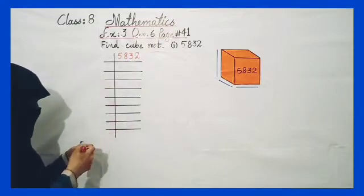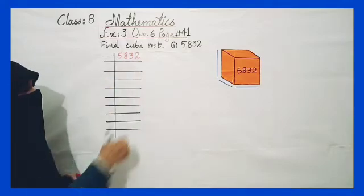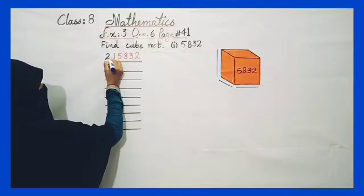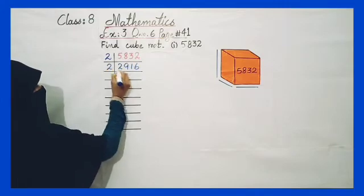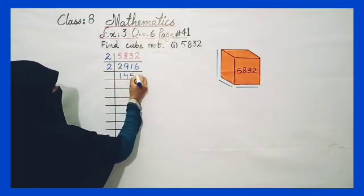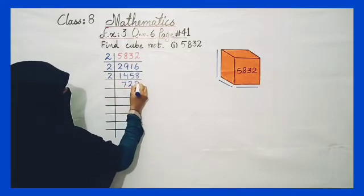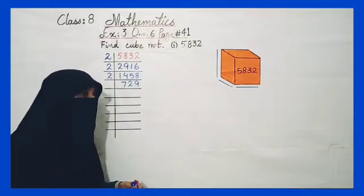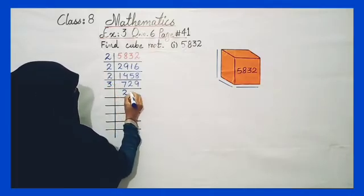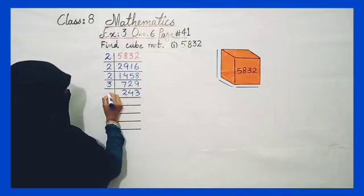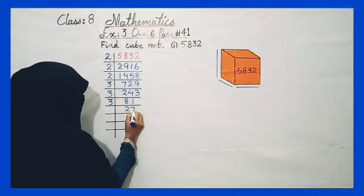Now let's solve 5,832. The first factor is 2 because it is an even number, and even numbers are divided by 2. We continue: again even, again even, again even. Then we get 3, again 3, again 3, again 3.